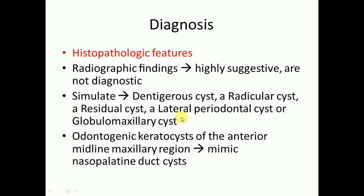Diagnosis of odontogenic keratocyst is based on histopathological features. Radiographic findings are highly suggestive but cannot be diagnostic, as OKC can simulate an anterior cyst, radicular cyst, residual cyst, lateral periodontal cyst, globulomaxillary cyst, or in the anterior midline maxillary region, a nasopalatine duct cyst.